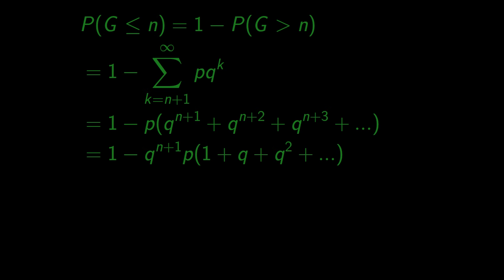So the probability that we will succeed after the first n coin tosses is 1 minus q to the power of n plus 1.